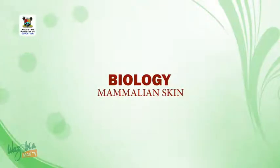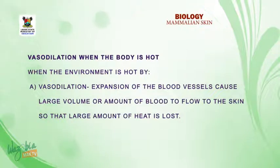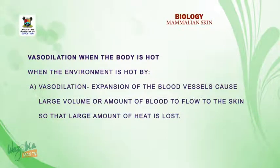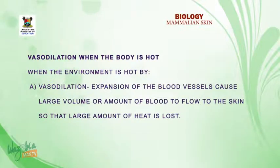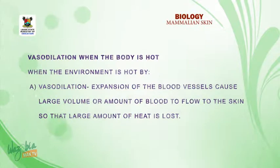Welcome back. We want to look at when the environment is hot. When the environment is hot, the skin can regulate body temperature by one, undergoing vasodilation — the expansion of the blood vessels. When the blood vessels expand, a large volume of blood will flow to the surface of the skin, thereby losing heat to the environment by radiation, convection, and conduction.